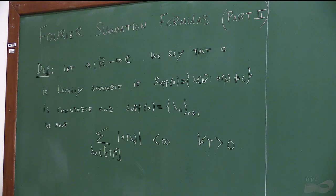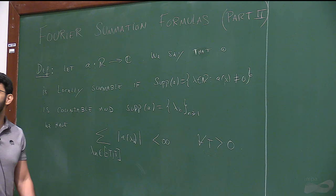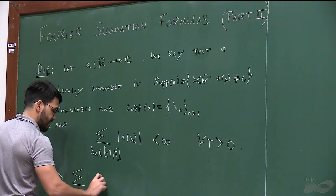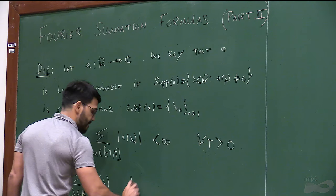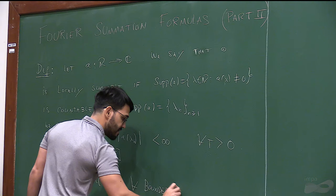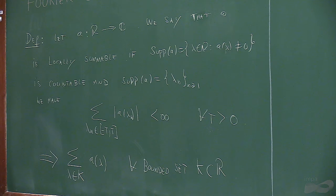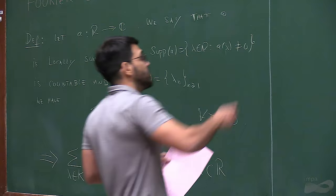The support will be contained in a countable sequence of points. You take any enumeration you like and the sum is always finite. This implies that for every bounded set K containing the reals, I can perform this sum and this number is well defined, independent of the summation I take. In this series it's better to think about functions like that.